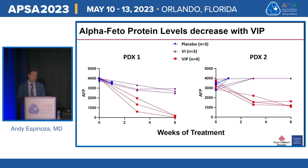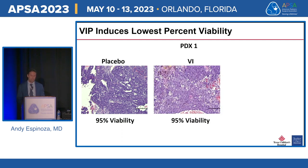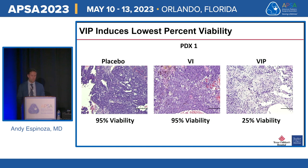AFP levels drawn at three and six weeks showed that VIP-treated mice had statistically significant AFP decreases compared to VI and placebo groups. Histological evaluation of the first PDX showed placebo and VI groups both had approximately 95% cell viability. In contrast, VIP-treated tumors had an average cell viability of approximately 25%, statistically lower than both groups, with significant treatment effects including mesenchymal changes and calcification.